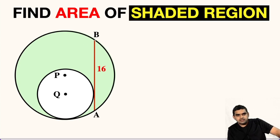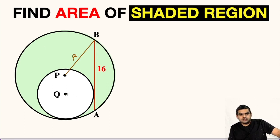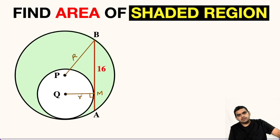First of all, let us join these two points B and P and name this as capital R. Capital R represents the radius of this bigger circle. Likewise, let us drop a perpendicular here and name this point as point M. This angle will be 90 degrees and QM will be equal to small r. Let us assume the radius of this smaller circle is small r.